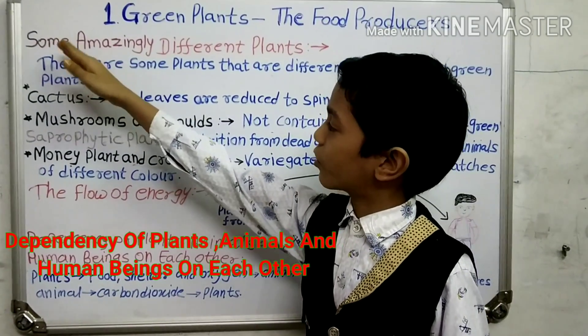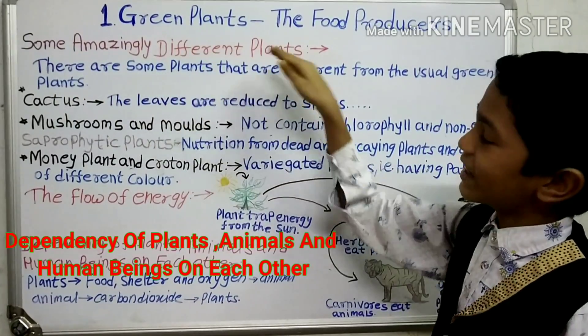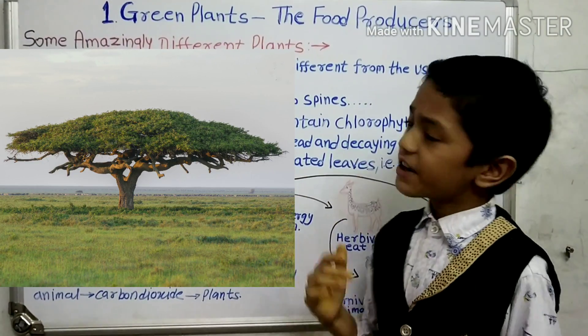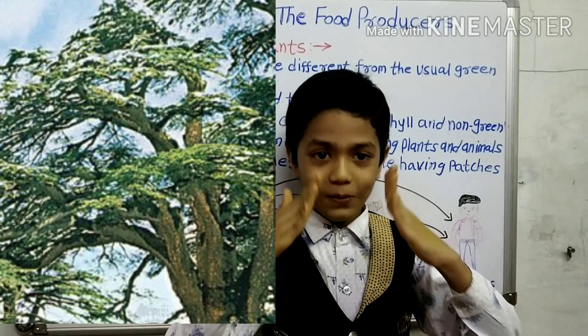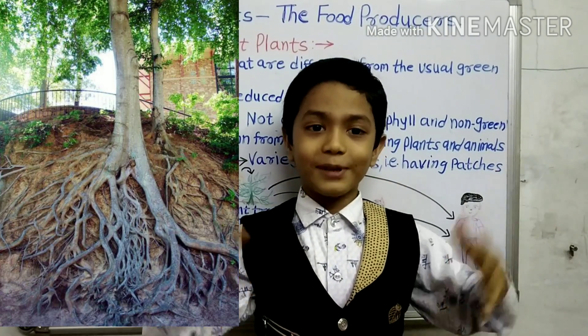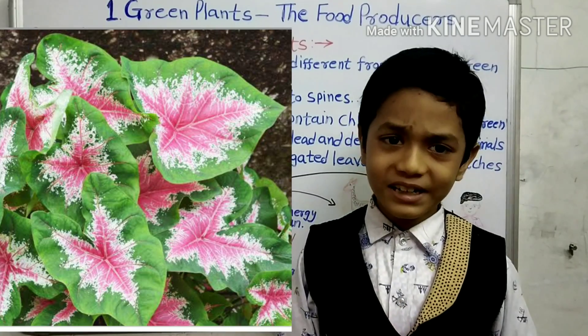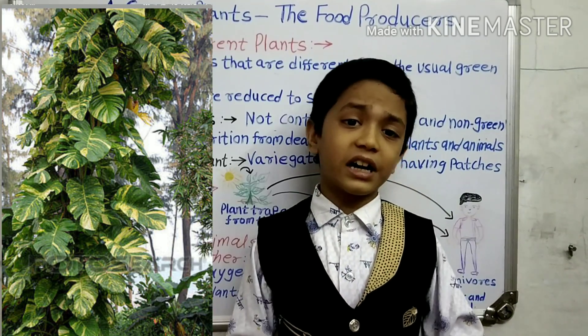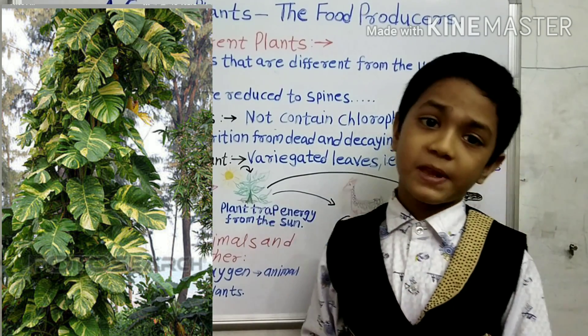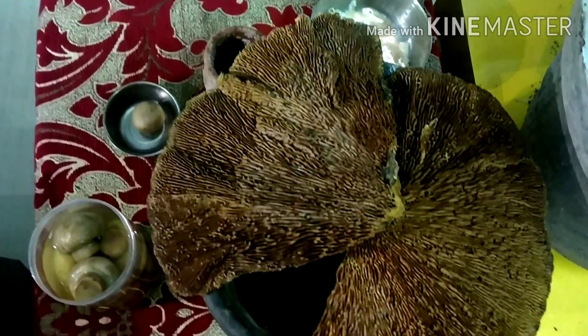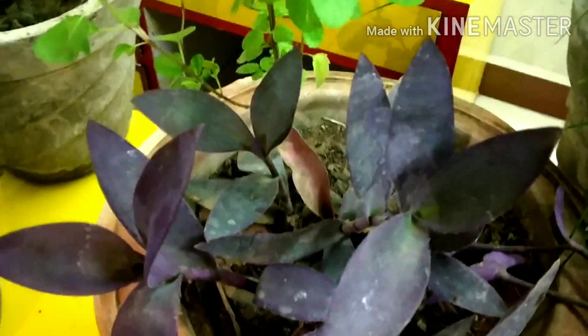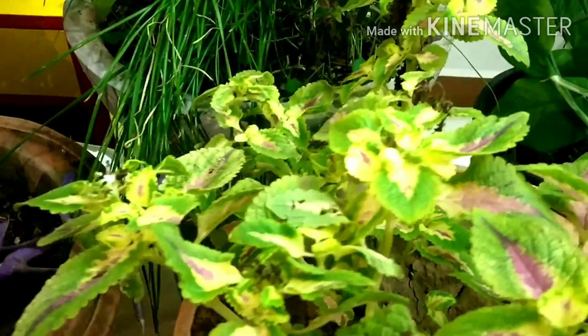The first topic for today is amazingly different plants. When we speak of the word 'plant', green leaves, brown trunk, and roots below the ground appear in our mind. But not all plants are like that — some are different from the usual green plants. There are many different types of plants in the world.